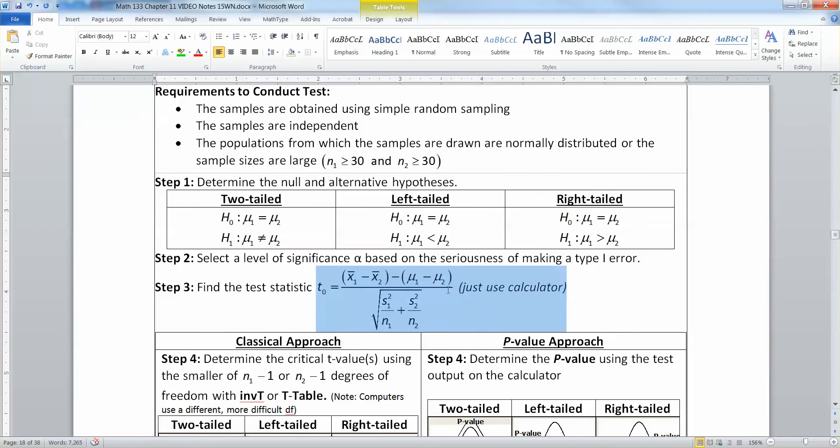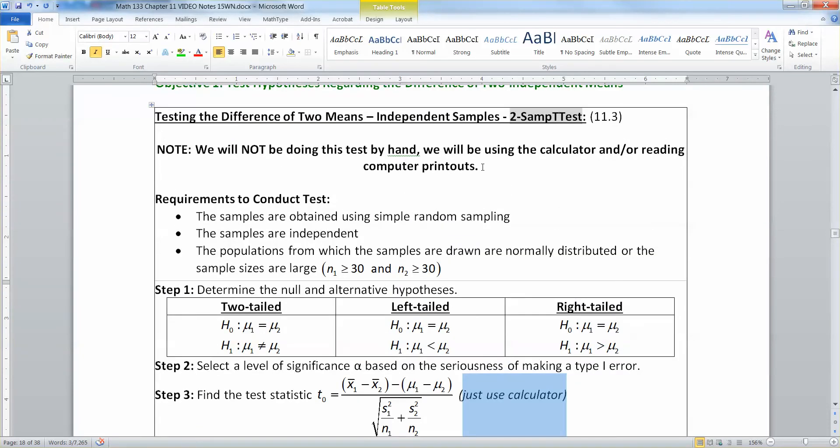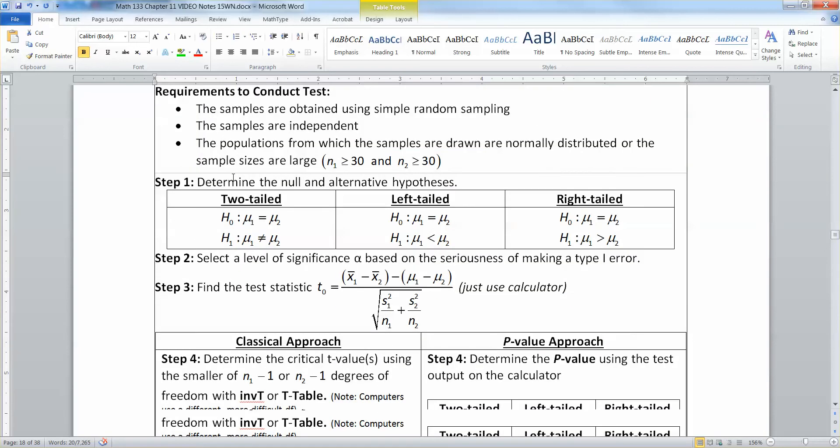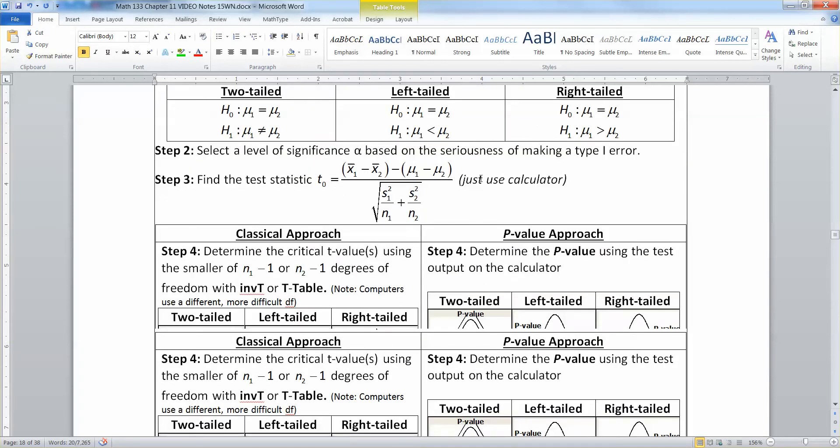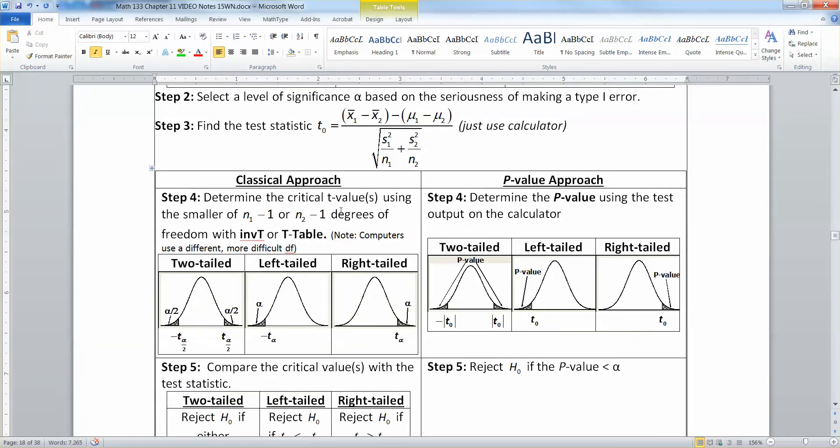Now here, if you'll notice, I put just use the calculator. I'm not going to make you substitute by hand the way I did in the other tests. And I wrote this one up here. We will not be doing this test by hand. We're going to use calculators and our computer outputs to do this stuff, because these formulas get pretty tricky to use. And so we're not going to do everything by hand. Then we have our classical approach, our p-value approach, just like usual, except degrees of freedom gets a little wonky in here.